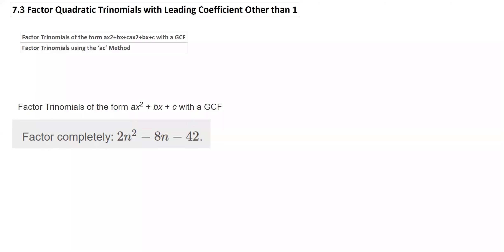Hello class and welcome to 7.3: Factor Quadratic Trinomials with Leading Coefficient Other Than One. In 7.2 we did leading coefficient of one; here we're doing anything other than one. We have two objectives: factoring with the GCF option, and factoring trinomials using the AC method. Let's start with the GCF.